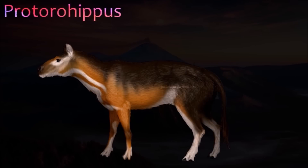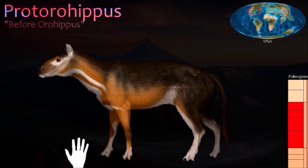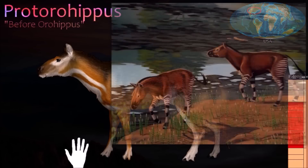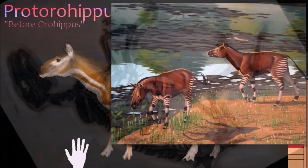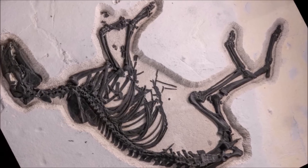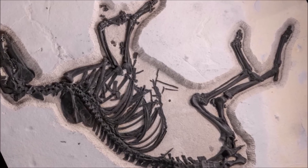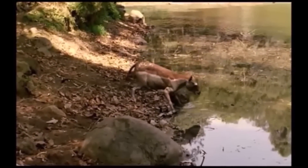Protorohippus is one of the earliest known horses. Its fossils were unearthed in western USA. It was about the size of a beagle or terrier, with short limbs bearing four toes on the front feet and three toes on the hind feet. The name Hyracotherium was once applied to early American horses, but recent research shows that this name applies to a horse-like European mammal, not a horse.